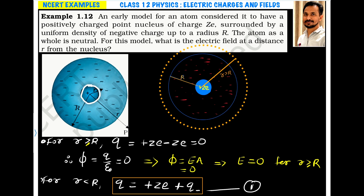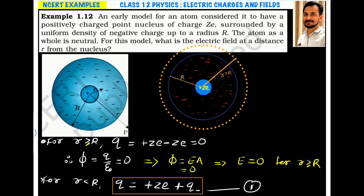Whatever amount of positive charge exists at the nucleus, an equal amount of negative charge is distributed throughout the sphere — hence it is neutral. For this model, what is the electric field at any point at a distance small r from the center?